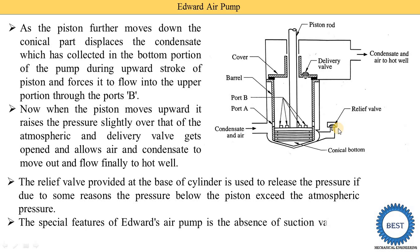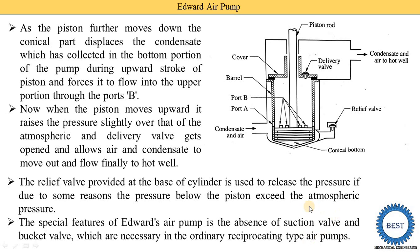The special feature of the Edward air pump is the absence of a suction valve and a bucket valve, which are necessary in an ordinary reciprocating type air pump. In a simple ordinary reciprocating type air pump, a suction valve and bucket valve are present, but in the Edward pump, these valves are not used. This completes the construction and working of the Edward air pump.